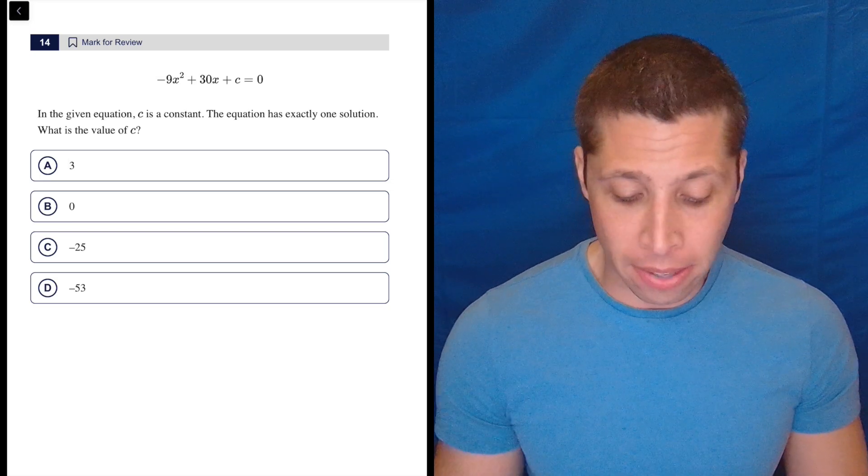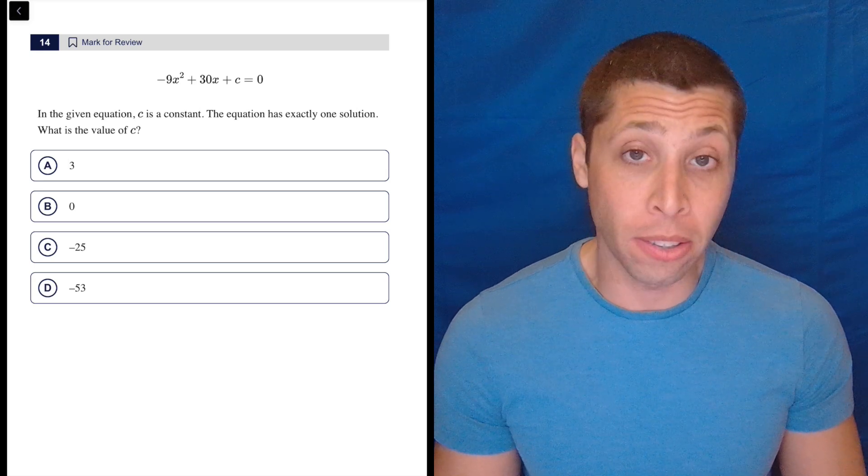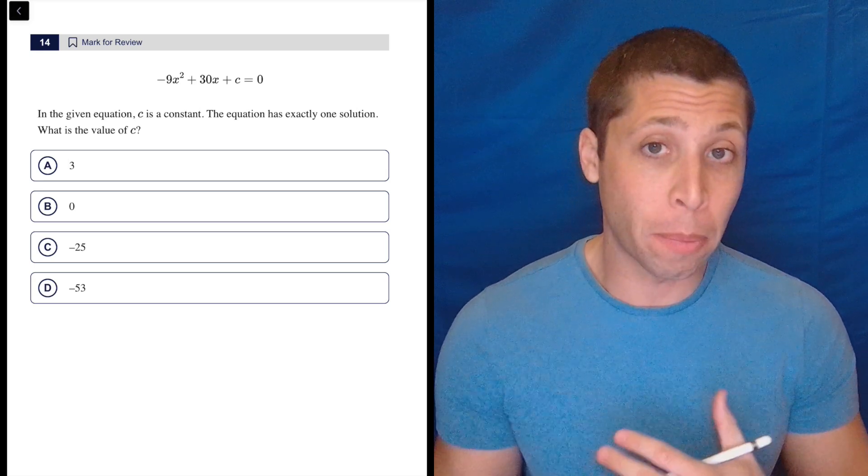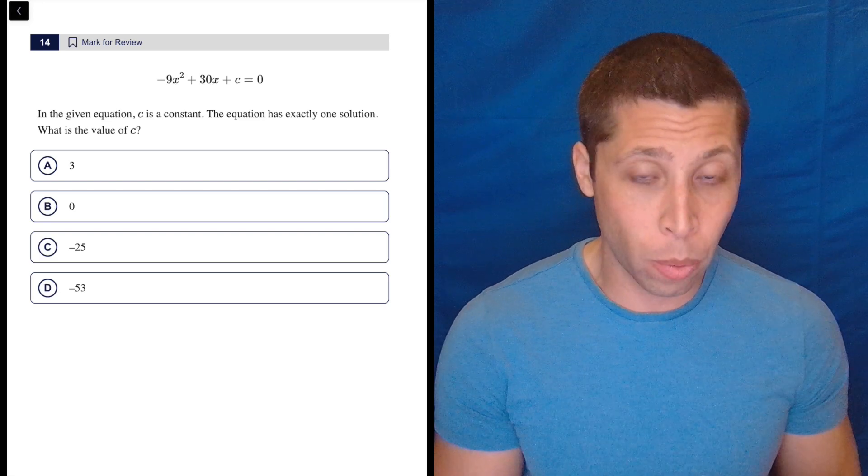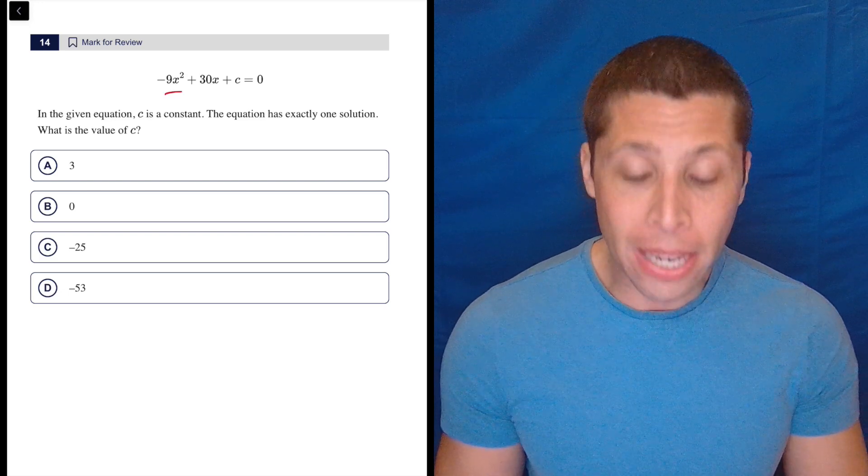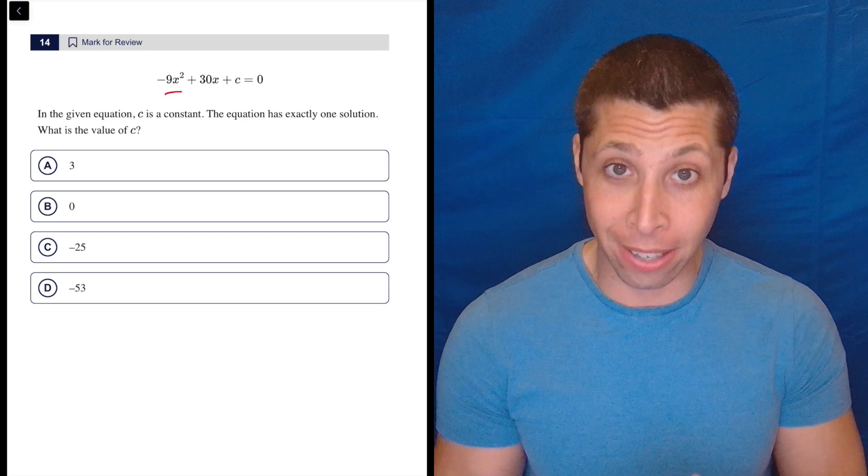I instantly recognize the topic. The equation has exactly one solution. So whenever they talk about the number of solutions, I know to ask myself, do I have an x or an x squared? Well, I do have an x squared, meaning that I could use the discriminant to deal with this.